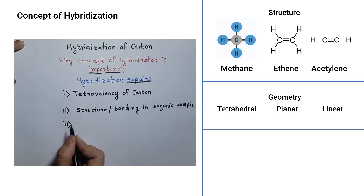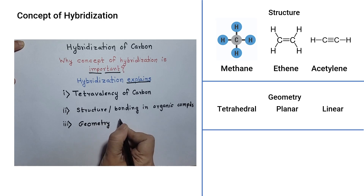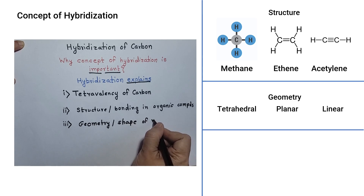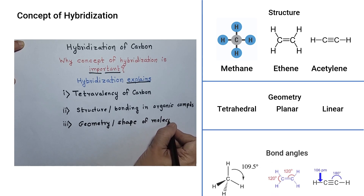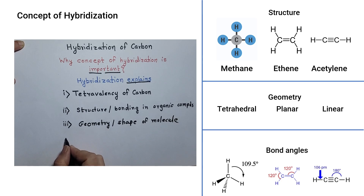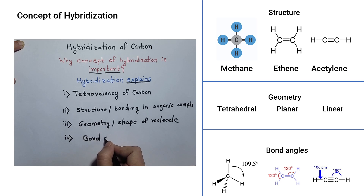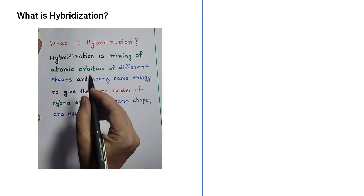Hybridization also explains structure and bonding in organic compounds. Compounds like methane, ethylene, and acetylene have different geometries: methane is tetrahedral, ethylene is planar, and acetylene is linear. These different bond angles can also be explained. Hybridization is a very fundamental concept in organic chemistry — without knowing hybridization we cannot proceed to advanced concepts.